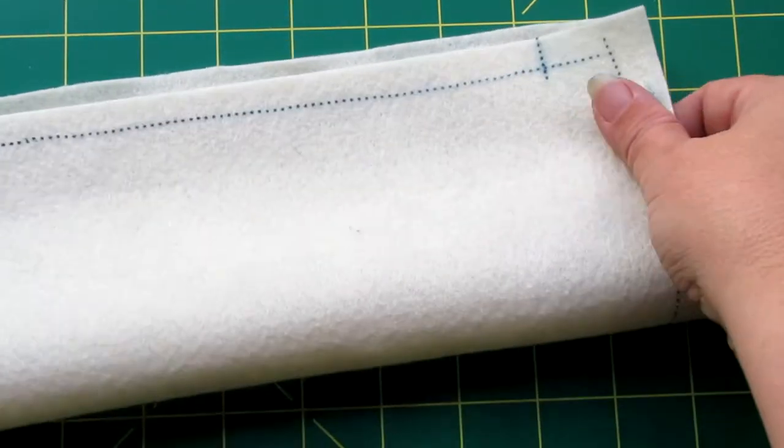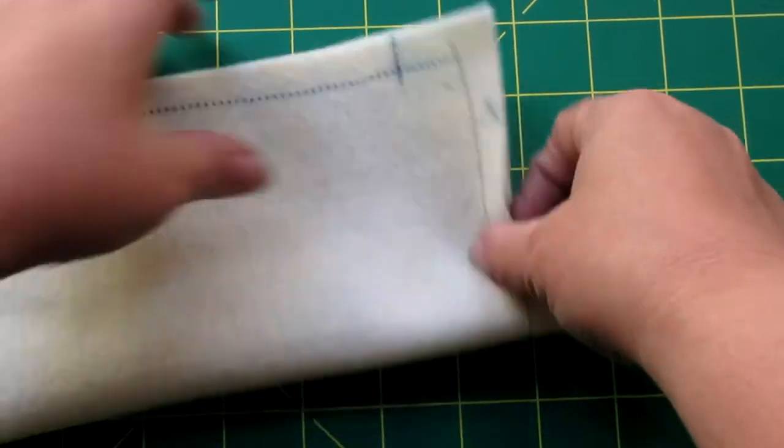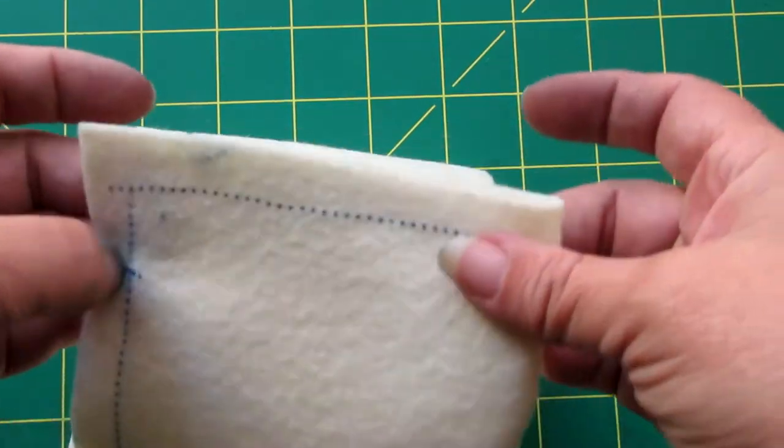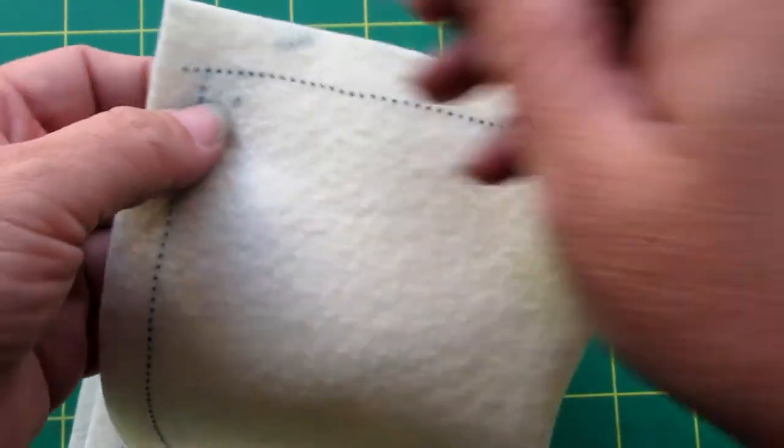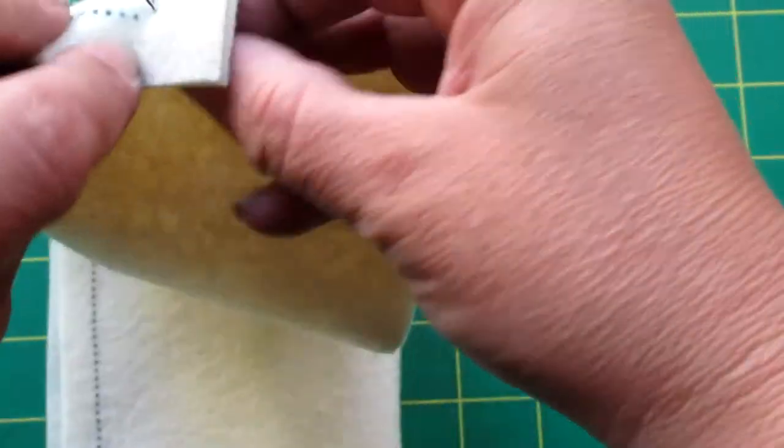To get started we're going to take one of your brim pieces and you're going to fold it in half lengthwise. What we're going to be doing is stitching along the short end so go ahead and pin that together making sure that those seam lines match up.